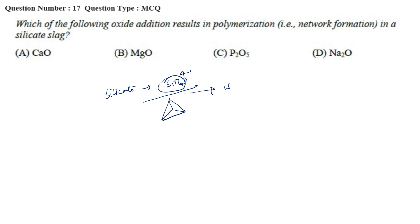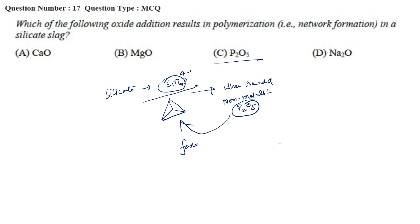Now, when we add a non-metallic oxide like P2O5, what happens? Whenever this type of non-metallic oxide is present, it also forms a chain structure. The chain structure is like PO4³⁻. It gets attached and thus helps in network formation.